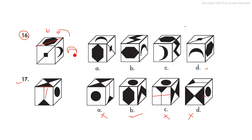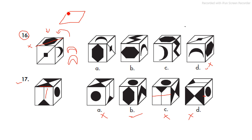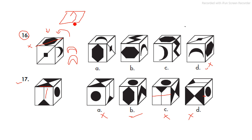Since option D is a mirror image and all other options have the hexagon in the middle, none of the given options can be the correct answer as stated. That is why the question appears to be wrong. However, if we correct the hexagon position — placing it in the middle of the cube in a straight way — then we can proceed with the question on that basis.